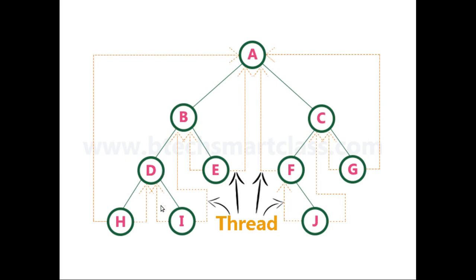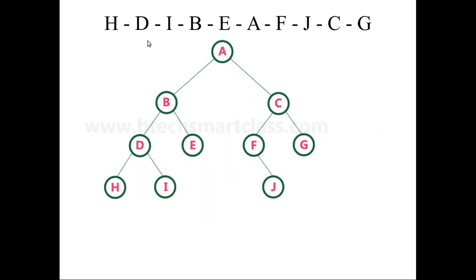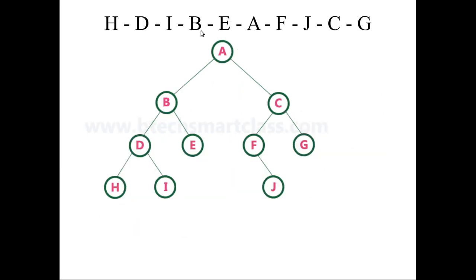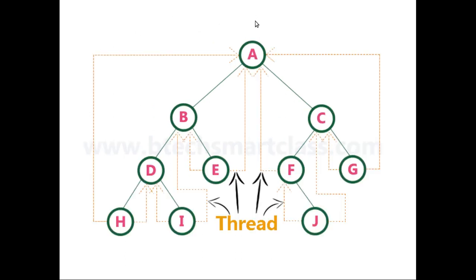Similarly for I, the inorder predecessor is D and inorder successor is B, so I's left will point to D and right will point to B. For E, the inorder predecessor is B and inorder successor is A, so the links are created accordingly. For your understanding the links are shown as threads, but in the program these will be implemented as pointers in the linked list.